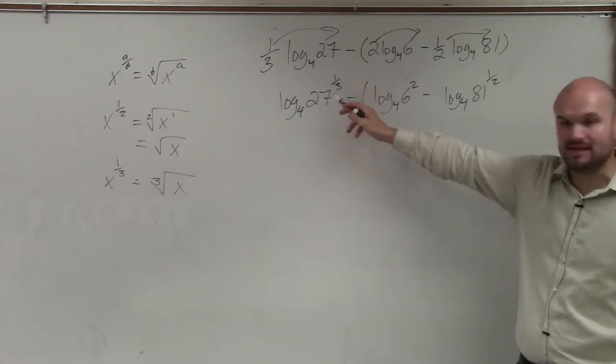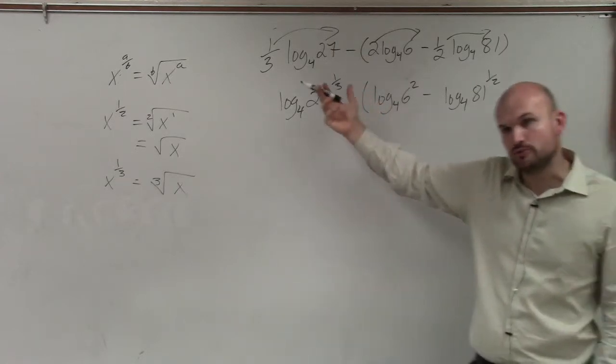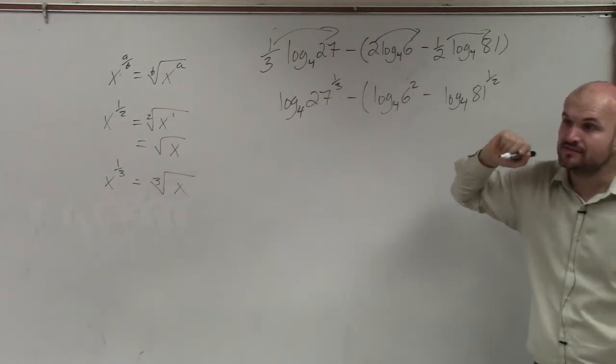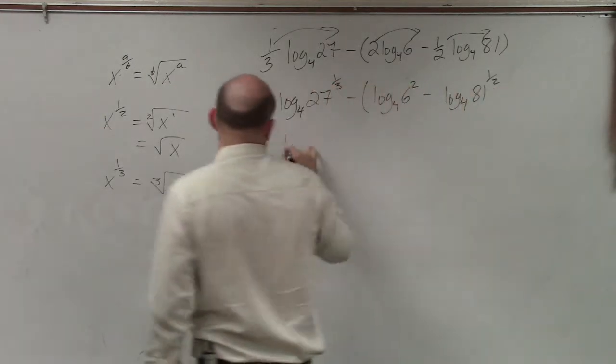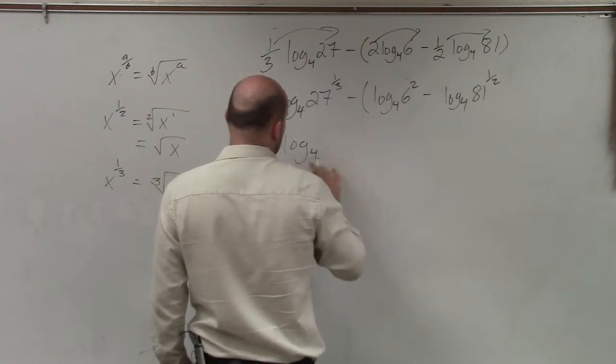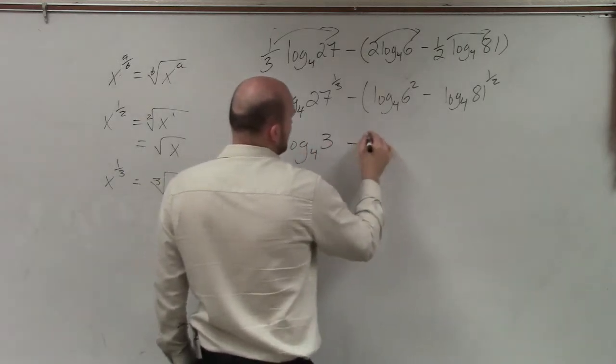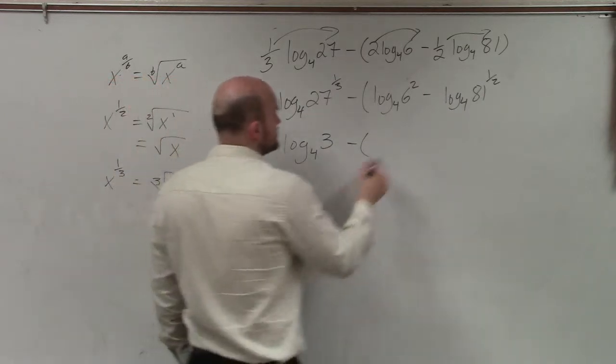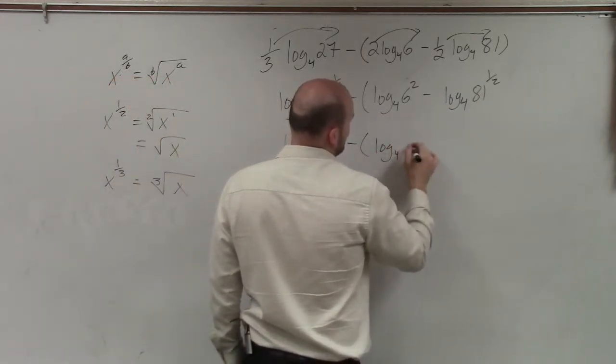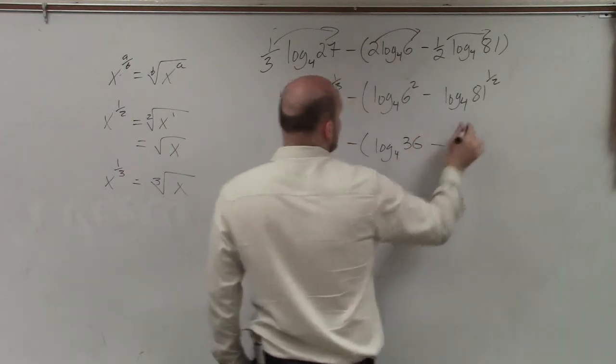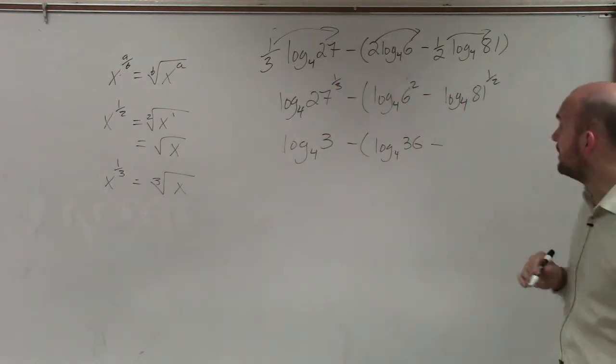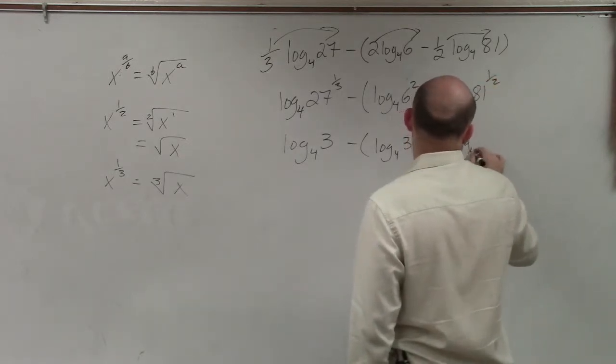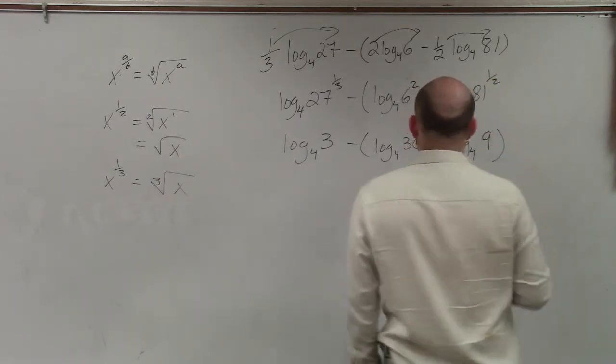So now, 27 to the 1/3 power is the same thing as the cube root of 27, meaning what number multiplied by itself three times gives you 27? 3. So I can write log base 4 of 3 minus parentheses 6 squared is 36 minus 81 to the 1/2 power is the same thing as the square root of 81, which is 9.